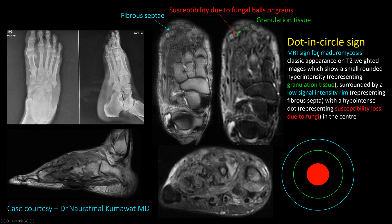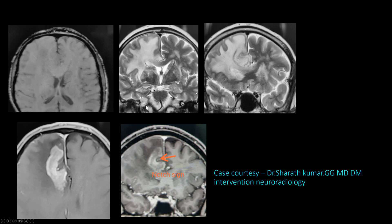Remember the dot-in-circle sign for Madura mycosis. Sometimes these hyperintense areas can be mistaken for phleboliths in hemangioma or rice bodies in tuberculosis.